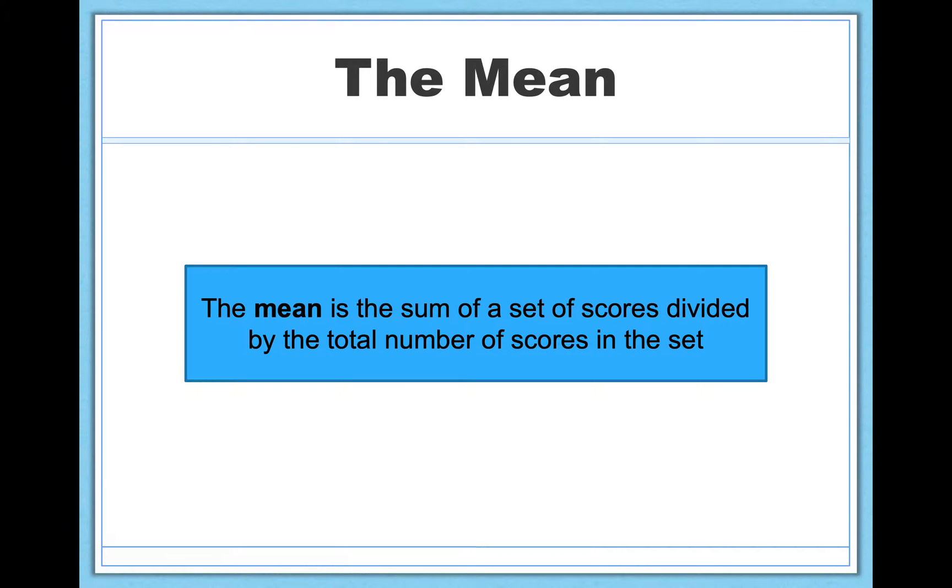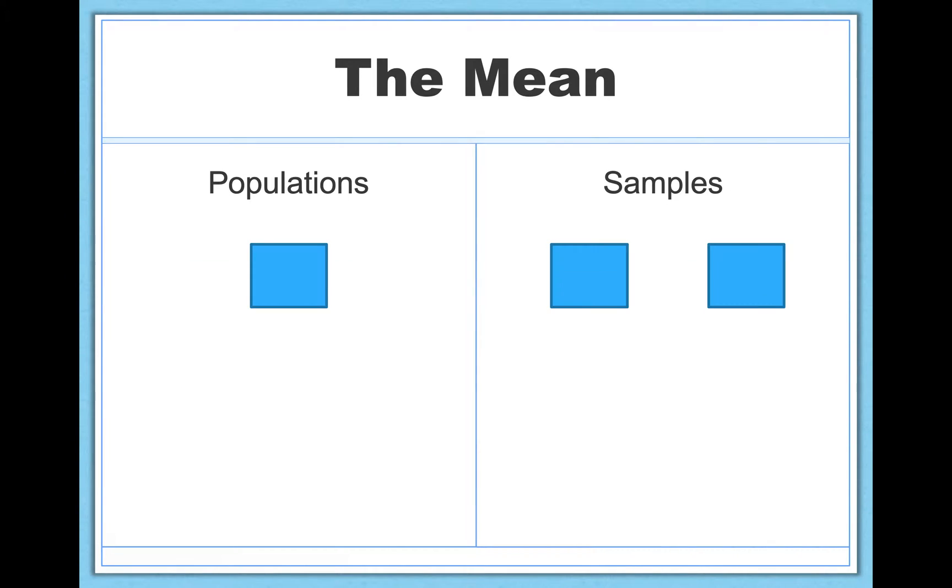So I have some jargon in this definition, but don't be intimidated by jargon. Always just refer back to your own understanding, and the jargon will start to make sense. The mean is simply the sum of a set of scores divided by the total number of scores in the set. This is just a fancy way of saying that the mean is just adding up all the numbers you have and dividing by how many numbers you just added up.